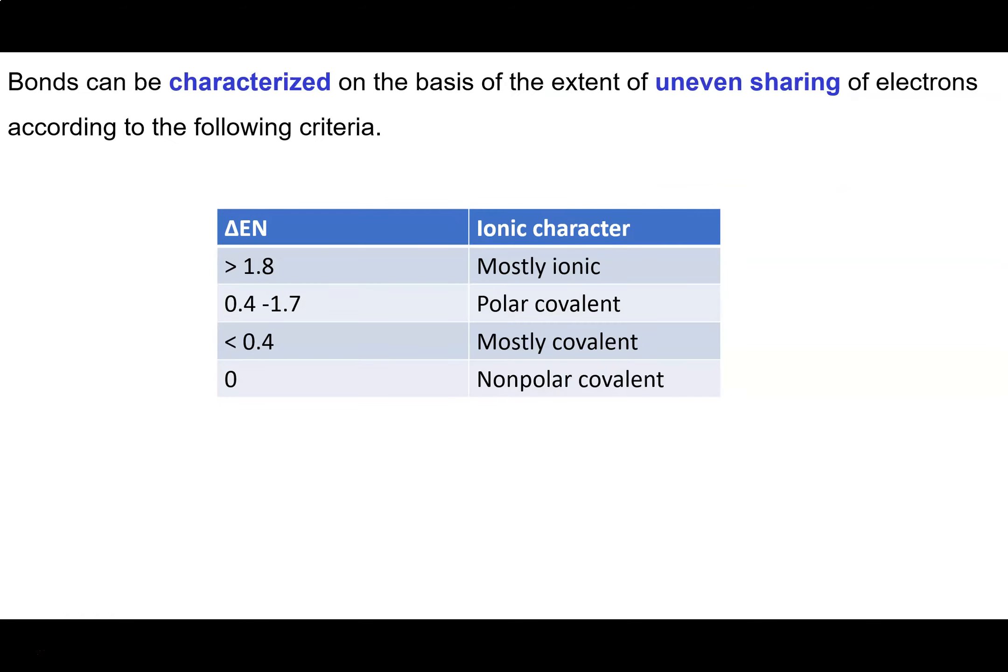So now we can characterize how polar or non-polar an atom is on the basis of this uneven sharing of electrons by using these electronegativity values. So in particular what we're going to say is that if we have a difference in electronegativity that's more than 1.8 between two atoms, we don't have sharing of electrons. We just have transfer.